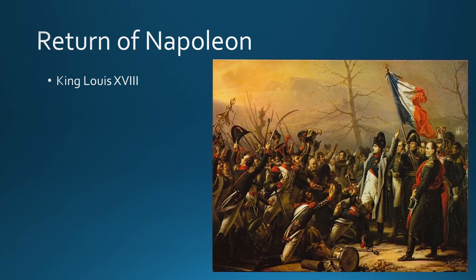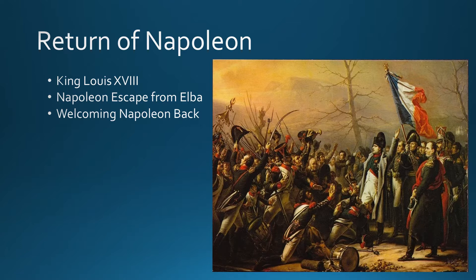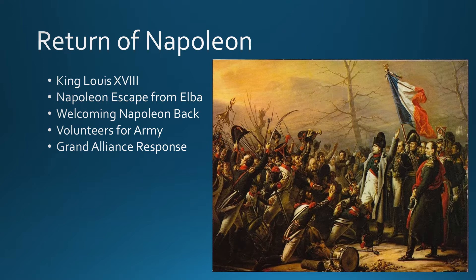We've seen a lot of madness. The question becomes: what do we do with France? A new king is decided — King Louis XVIII, the brother of Louis XVI since the son was killed, making him next in line. In less than a year, Napoleon escapes from Elba and comes back to France. As he returns, many welcome Napoleon back and some even volunteer for his army. The Grand Alliance says they need to get rid of this guy once and for all and combines all their armies together.